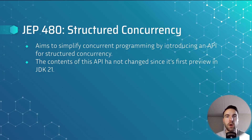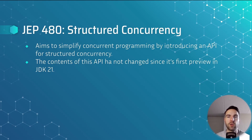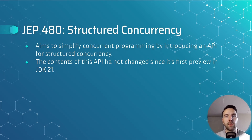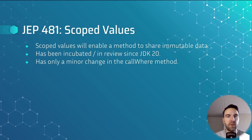Structured concurrency is also a recurring feature in the JDK. It aims to simplify concurrent programming by introducing an API that treats groups of related tasks as a single unit of work, streamlining error handling. The contents of this API have not changed since its first preview in JDK 21.